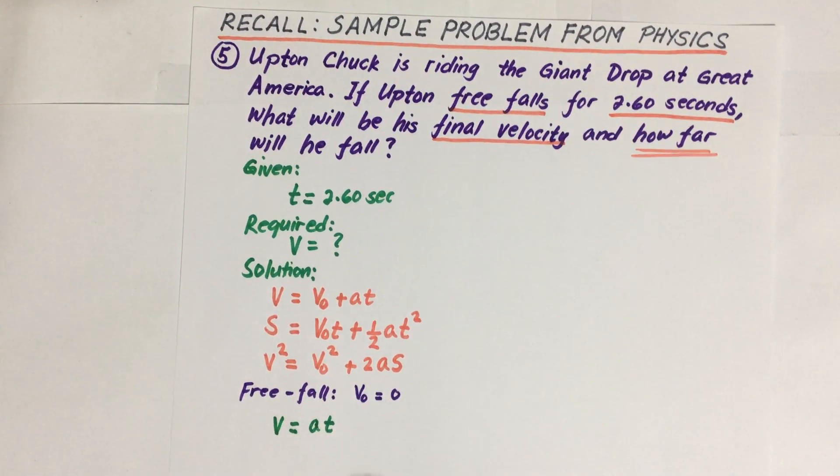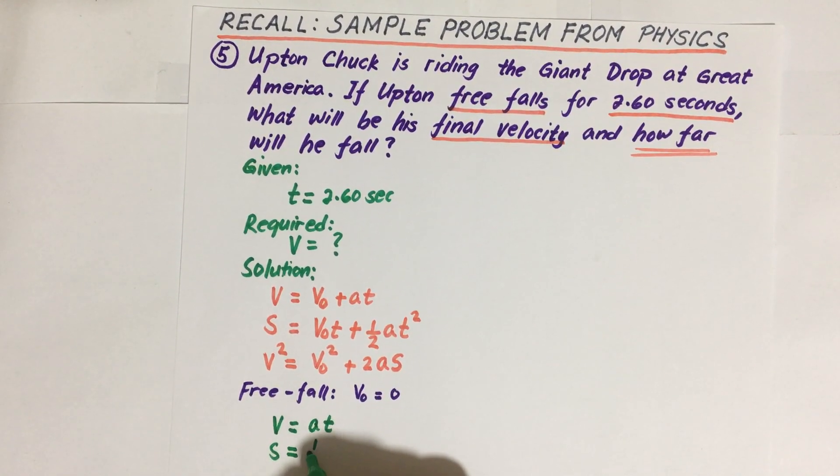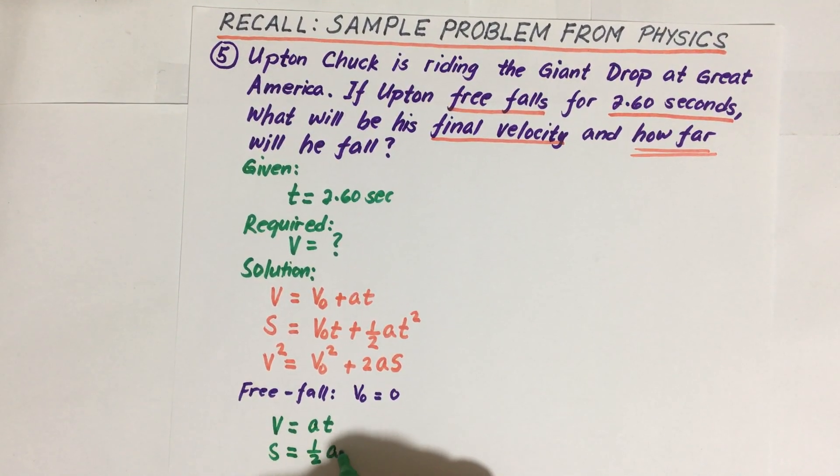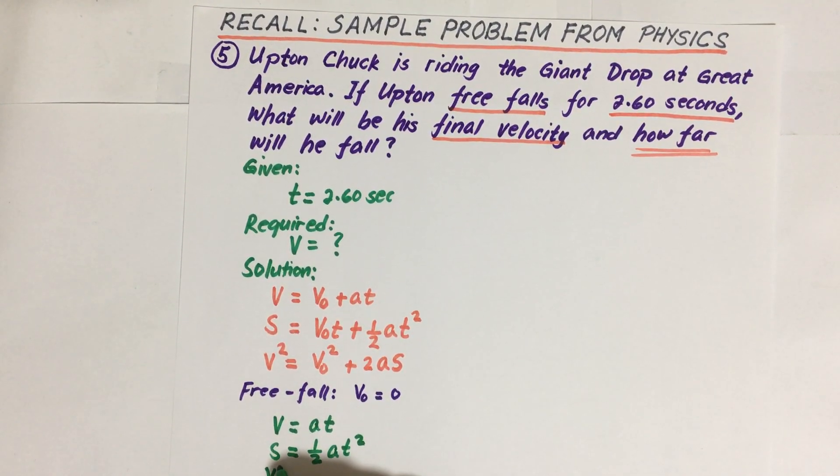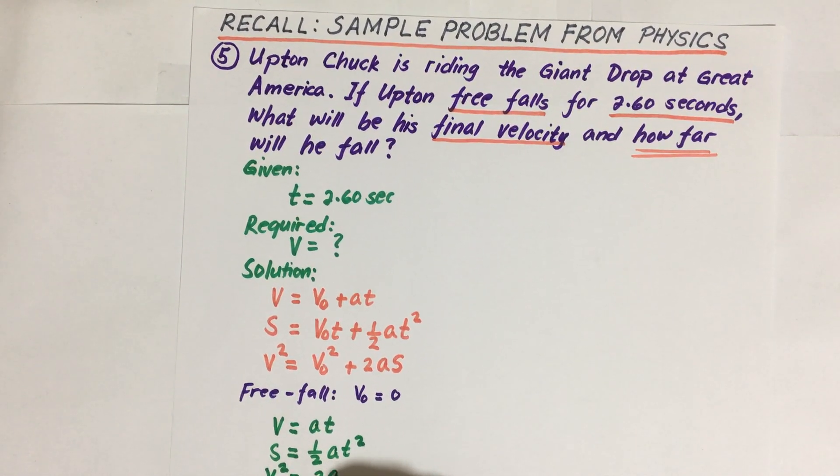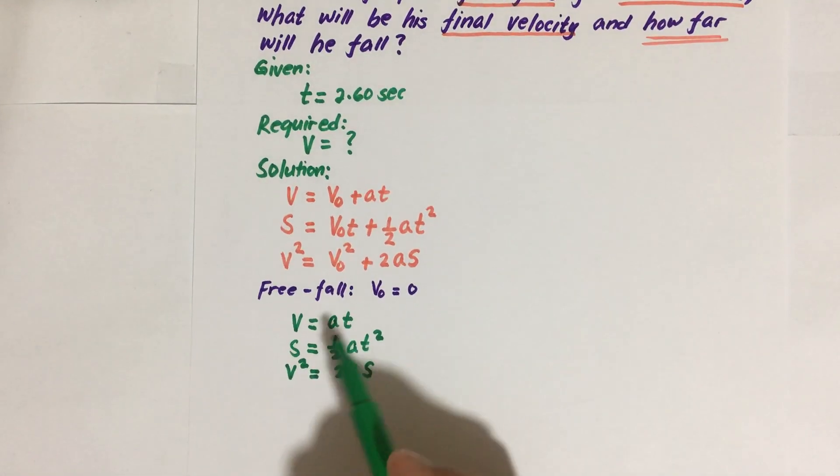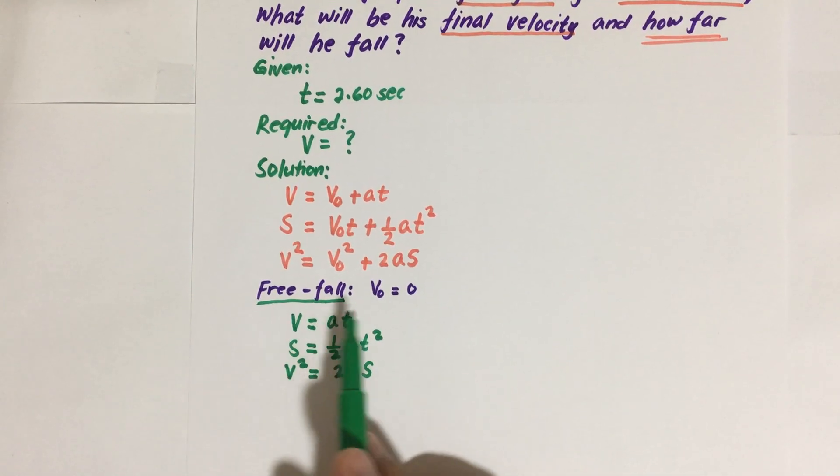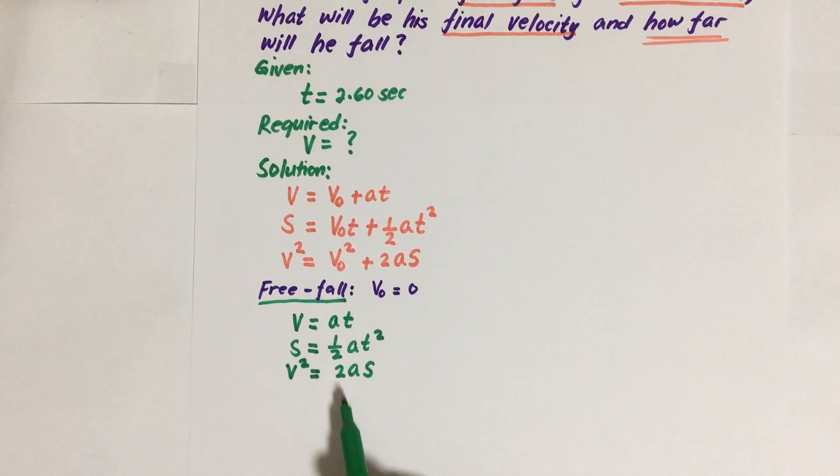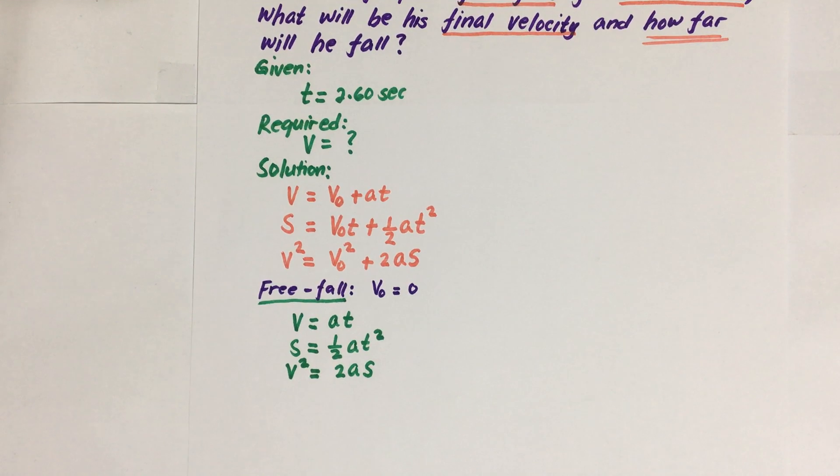So now our first equation becomes V equals at. The other one becomes S equals one half at squared. And our third formula, final velocity squared, is equal to 2aS. So we have reduced our formula into this resulting formula for a free fall.